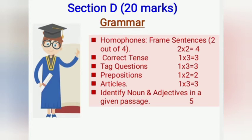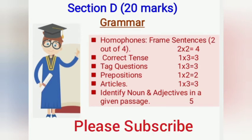Next you have correct tense — from correct tense there will be one into three, equal to three marks. Next you have tag questions — from tag questions you will get three marks. Next, prepositions — from prepositions you will get two marks. Then articles — from articles you will get one into three, three marks. Articles means 'a', 'an', and 'the'.